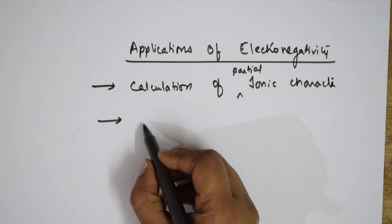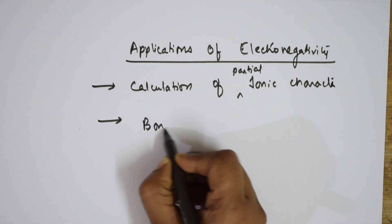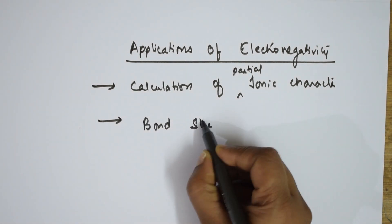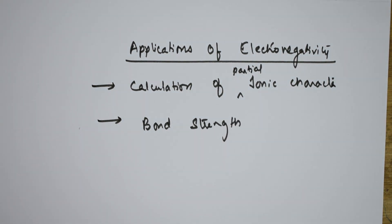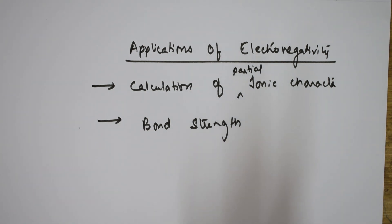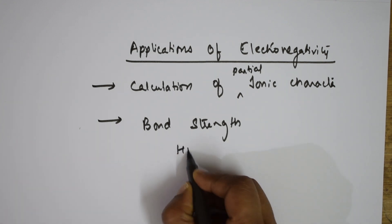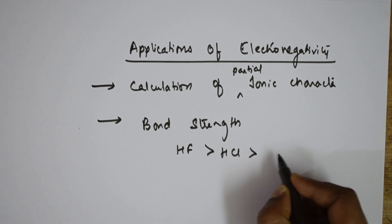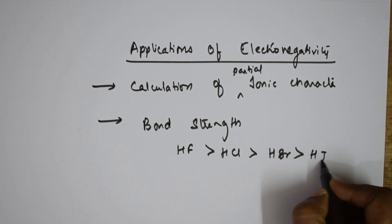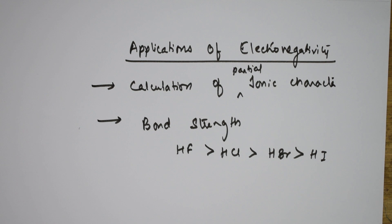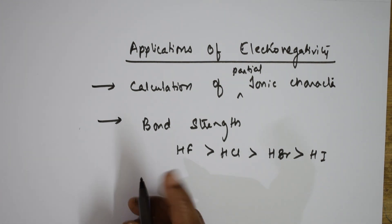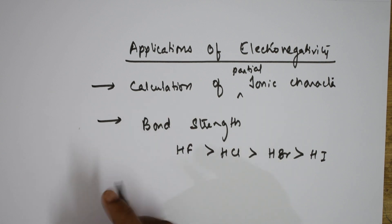Second, electronegativity can be used for calculating bond strength. The electronegativity difference is directly proportional to bond strength — the greater the electronegativity difference, the greater the strength of the bond. For example, bond strength order: HF > HCl > HBr > HI.